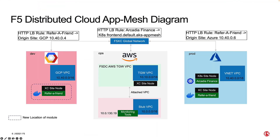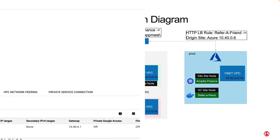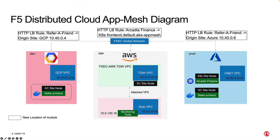Now I'm going to show you an application that is broken out by module. I have the Arcadia Finance app. It's currently running in AWS and also in Azure, and a module from that app is being moved from Azure to another contractor that will be maintaining it, and they happen to be using GCP. If you notice here on the slide, the sites on the left and right — GCP and Azure — both use the exact same CIDR block. And in order to overcome this problem, we use an HTTP load balancer to address this specific scenario.